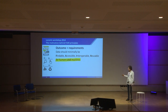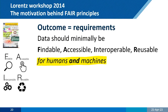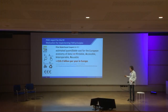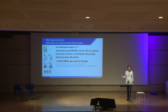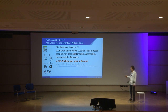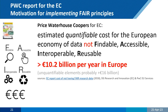The outcome of that workshop was that data should minimally be FAIR — for humans and machines. The quantifiable costs of not being FAIR were estimated by PricewaterhouseCoopers at 10 billion euros per year in Europe. That's where companies and industry started paying attention. There are also unquantifiable costs that may double that amount. The difficulty, as we all know, is that FAIR data is used by other people than those creating it.